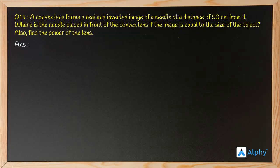It's easy to answer the first part of the question: where is the needle placed? You remember, right, when do we get the image and object to be of the same size? Actually, when the object is at the 2F point, the image also forms at the other 2F point.